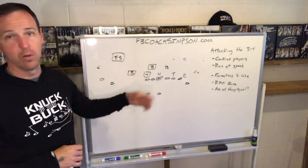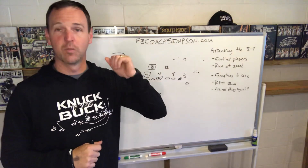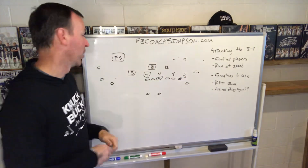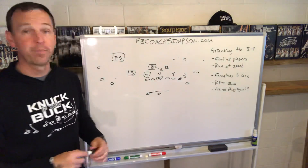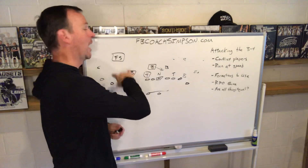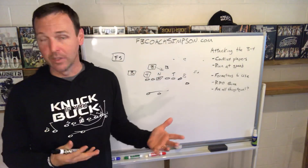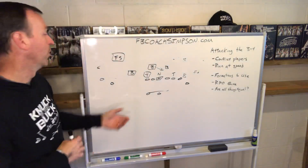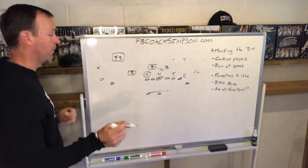Our quarterback will call whatever we've decided that year — some years it's been 'key,' some years it's been a different call — and we're going to read this player. Our guy's going to cross the face; if you fly this direction, we're going to pull the ball and either run it, or we're going to run a route in behind you and pull the ball and throw it, depending on our athletes that year and the RPO we choose. Let's say we want to come out and do the same thing with the outside linebacker.